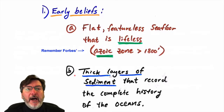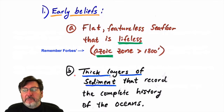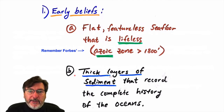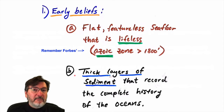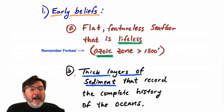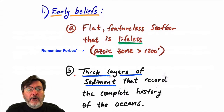Let's start with early beliefs about how the ocean basins came to be. The first was that the deep oceans would be flat, featureless, and lifeless — remember Forbes' azoic zone, where anything greater than 1,800 feet depth would have no life. Second, it was assumed that ocean basins were the age of the Earth and would have sediments accumulated since the Earth formed, giving you the entire record of the Earth on the seafloor if you could just drill down through them.